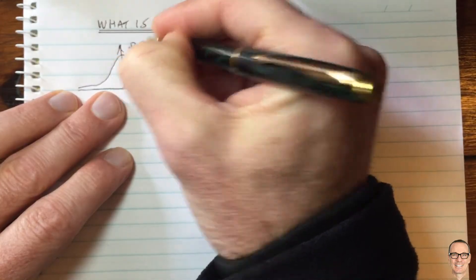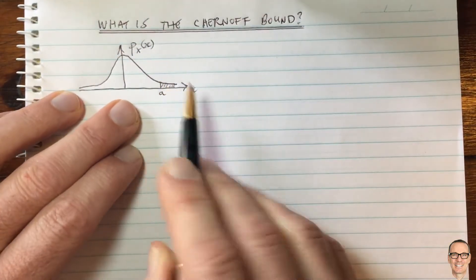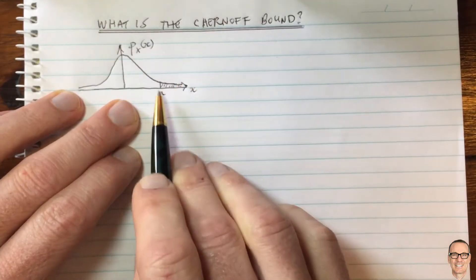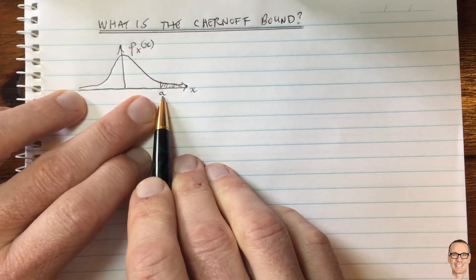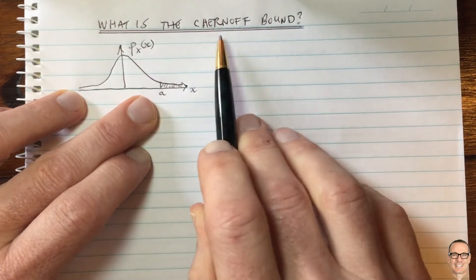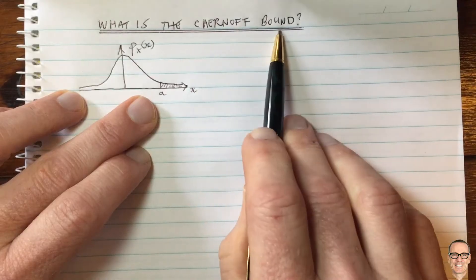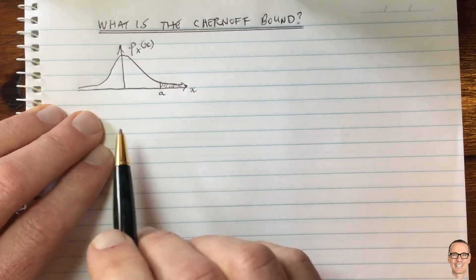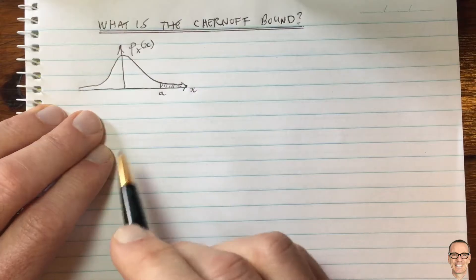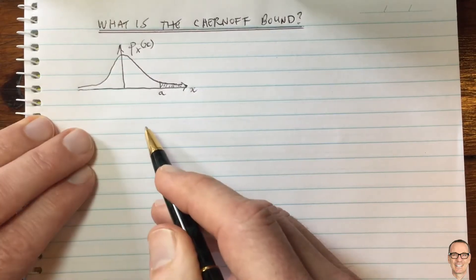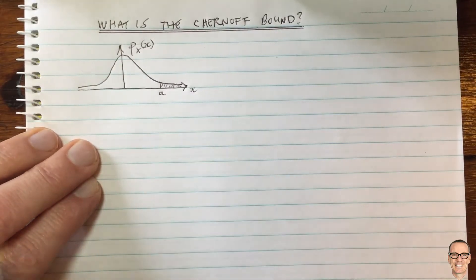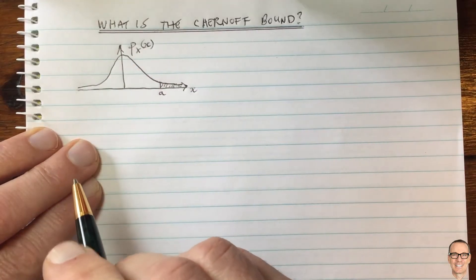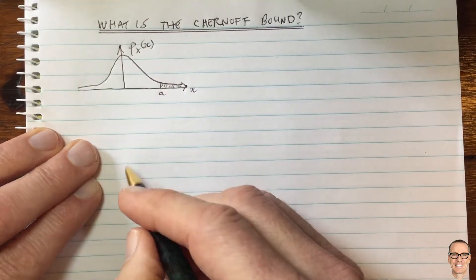This is the probability density function, and if you're interested in the area under the PDF for values bigger than a certain value a, then you may be interested in the Chernoff bound. For more information on PDFs, check out the links in the description below, where there are other videos explaining random variables, PDFs, and related functions.